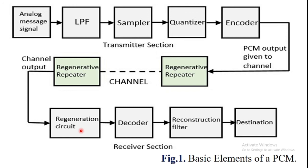The regenerative repeater circuit increases the signal strength. The output of the channel is fed to a regenerative repeater circuit. Its importance is to compensate for signal loss, reconstruct the signals, and increase the signal strength.